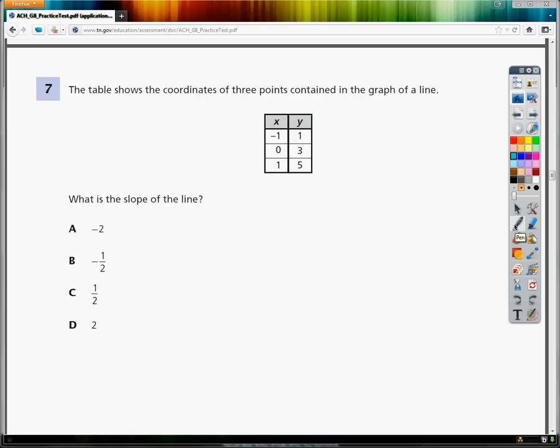This is question number seven. The table shows the coordinates of three points contained in the graph of a line. What is the slope of the line?